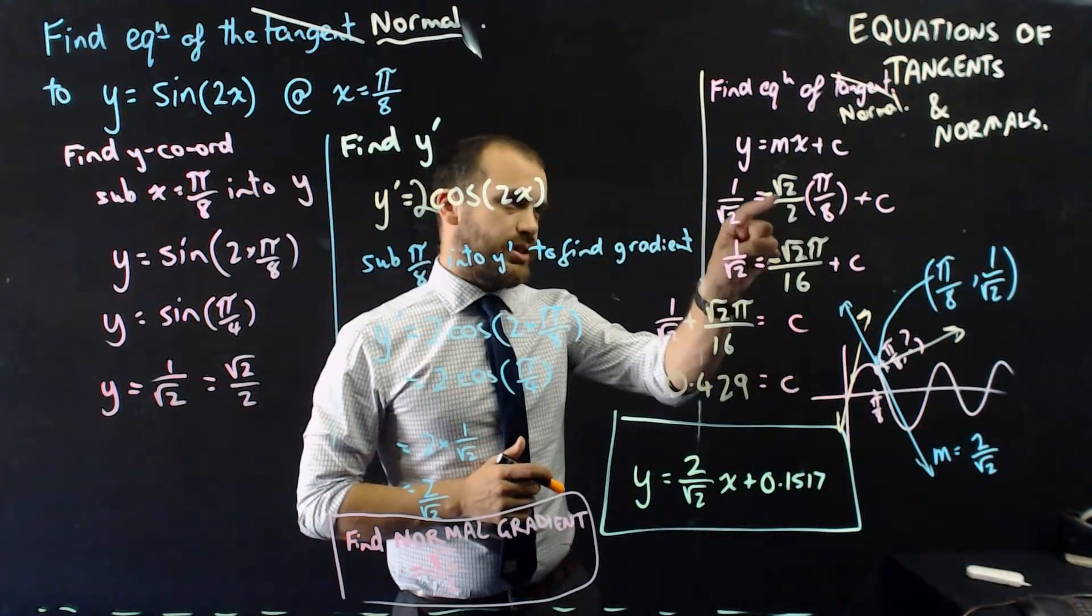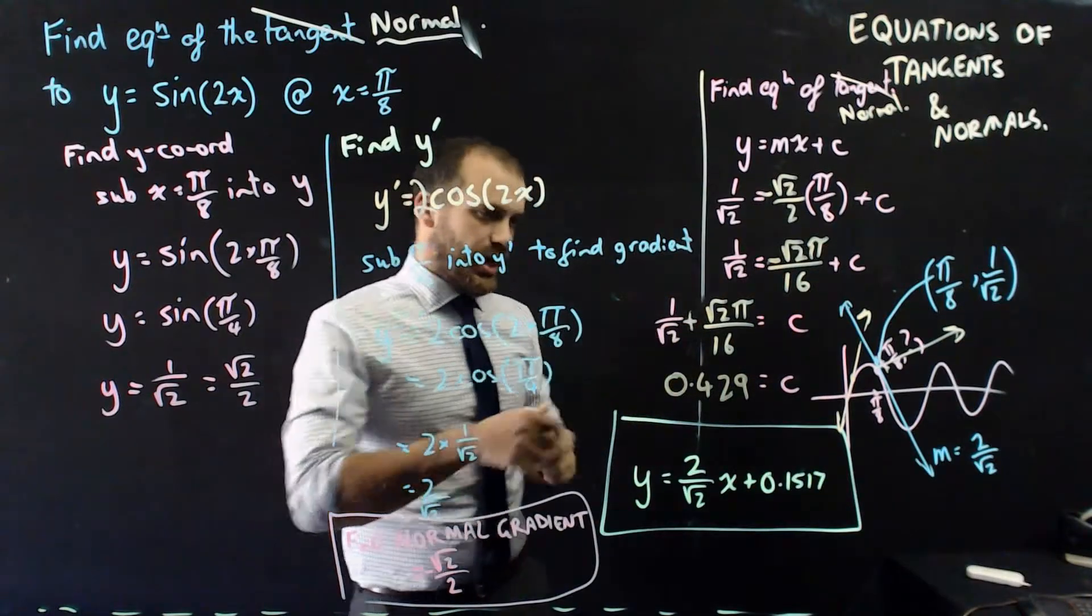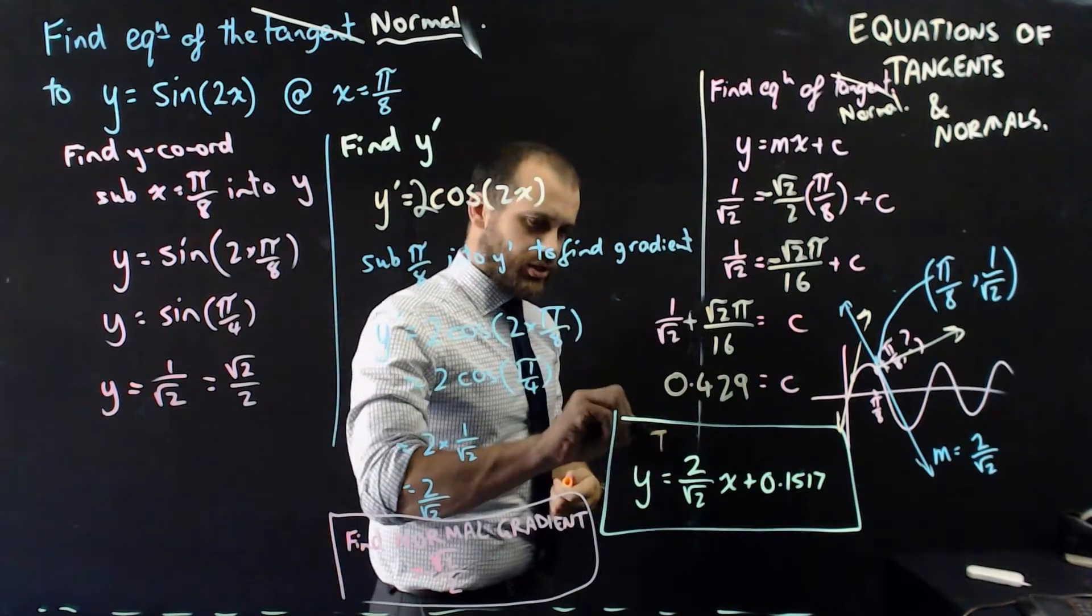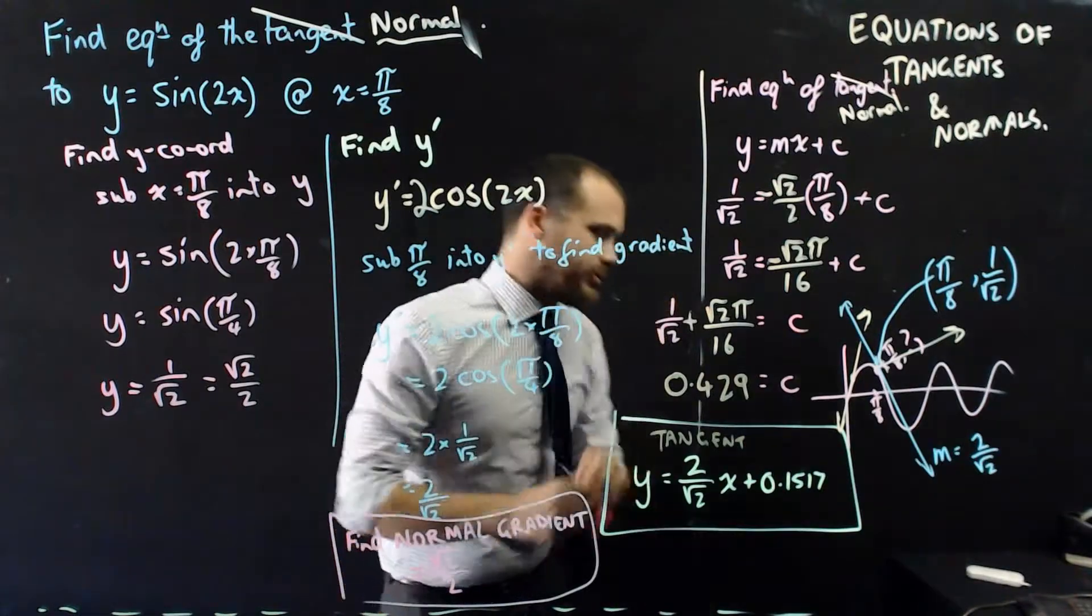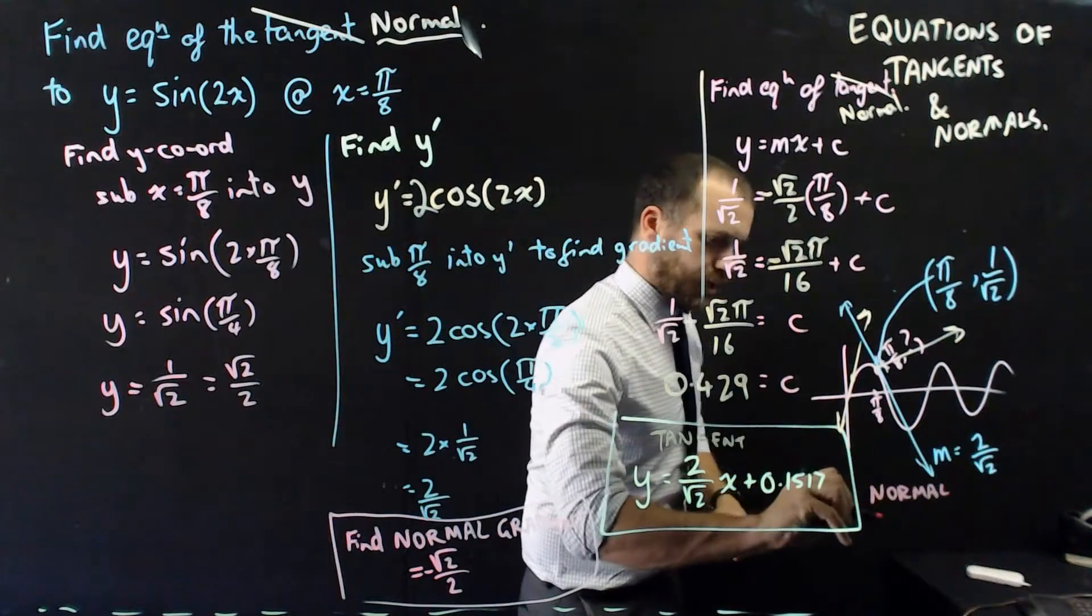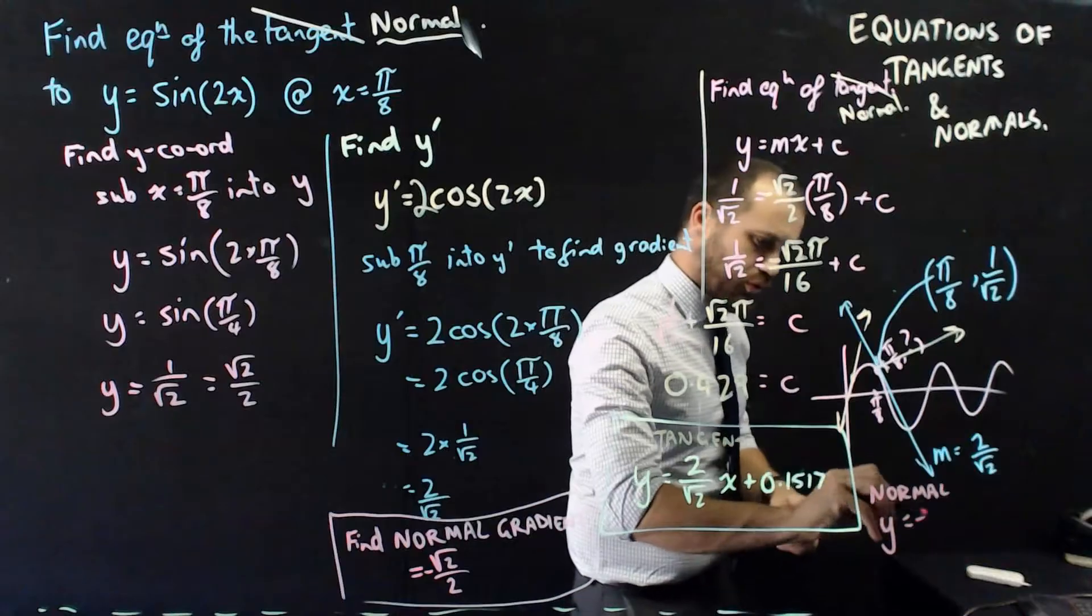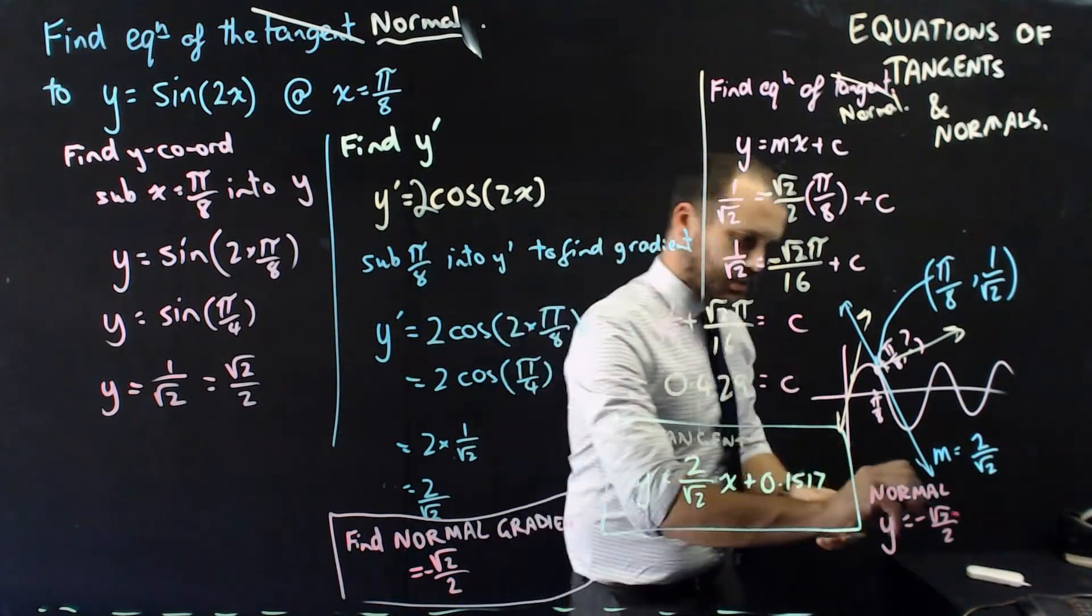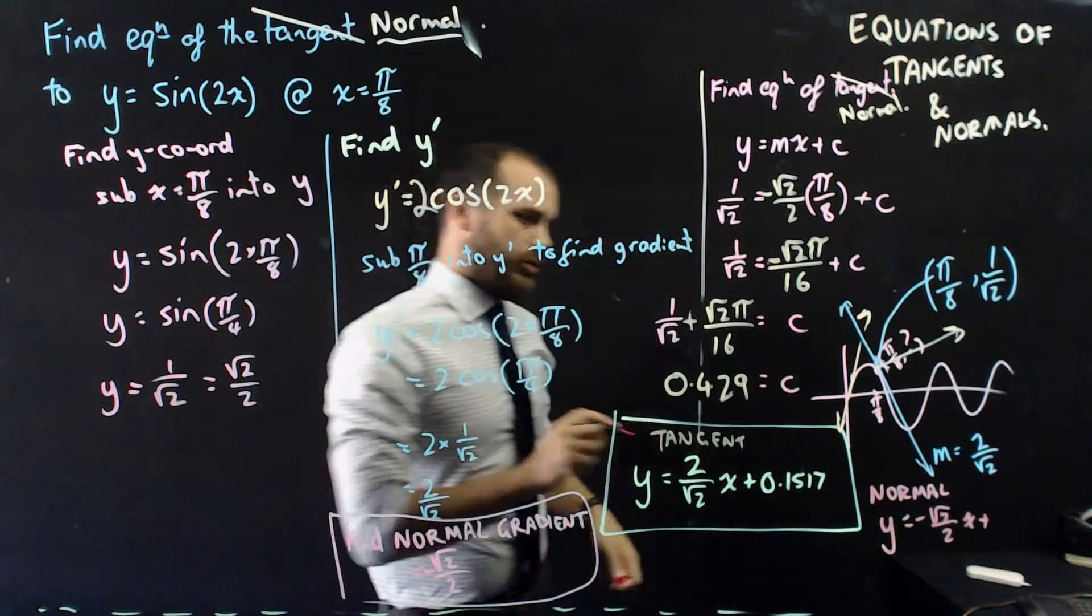I had to change a couple more numbers here. This multiply that makes that, move that to that side, we get this, and now we get a new number, 0.429. Now this was the equation of our tangent here, and the equation of our normal is y equals our new normal gradient, which is negative root 2 on 2, x plus our new c value, which is 0.429.